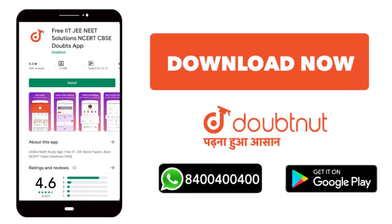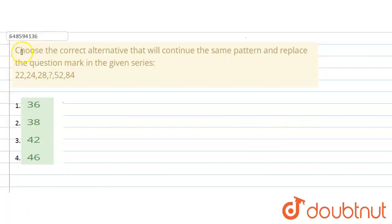The question says, choose the correct alternative that will continue the same pattern and replace the question mark in the given series. The series is 22, 24, 28, question mark, 52, 84. The options are 36, 38, 42, and 46.